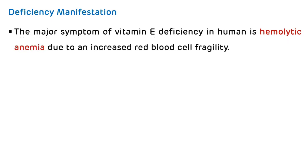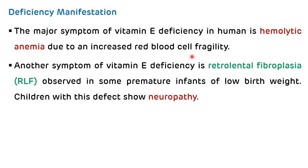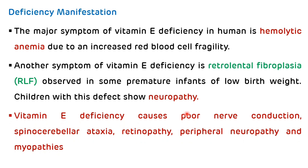The major symptom of Vitamin E deficiency in humans is hemolytic anemia, due to increased red blood cell fragility. Another symptom is retrolental fibroplasia, observed in some premature infants of low birth weight, and children with this defect show neuropathy. Vitamin E deficiency also causes spinocerebellar ataxia, retinopathy, peripheral neuropathy, and myopathies.